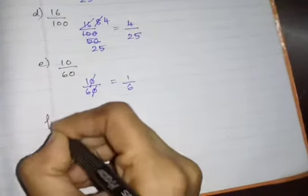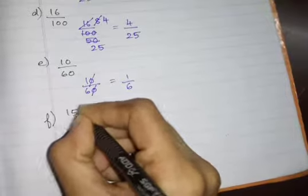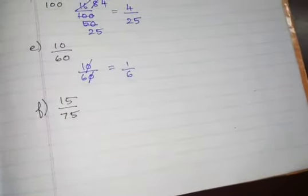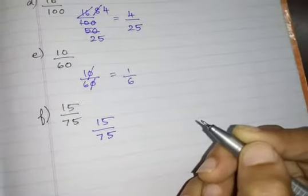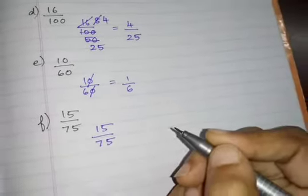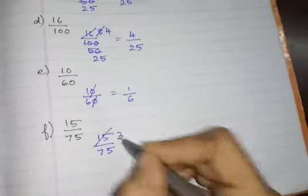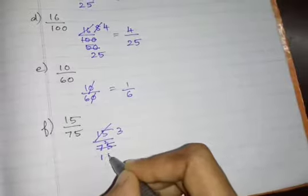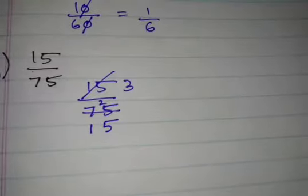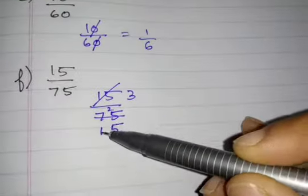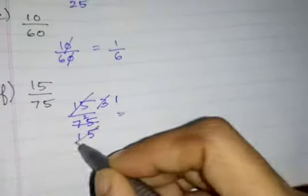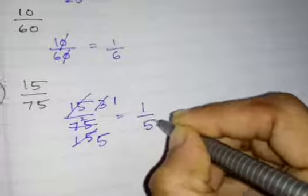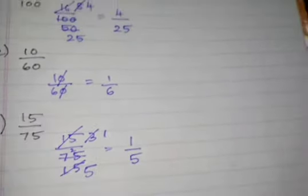Then, what is the F problem? 15 by 75. Both come together in the 5th table. 5 threes are 15, 5 fifteens are 75. Then again: 3 ones are 3, 3 fives are 15. So 1 by 5 is the simplest form of 15 by 75.